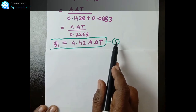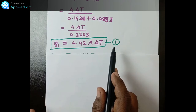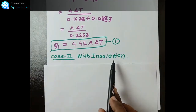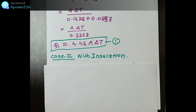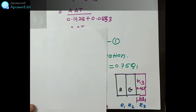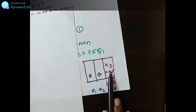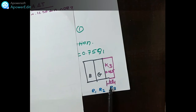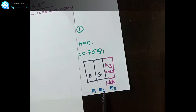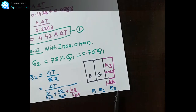Now we take Case 2, which is with insulation. The rockwool insulation is the third layer added to the wall — brick, gypsum, and rockwool. We have to find dimension B3. In this case there are three layers, so there are three thermal resistances: R1 for brick, R2 for gypsum, and R3 for the insulation layer.